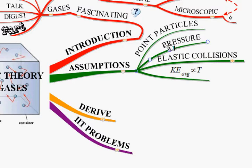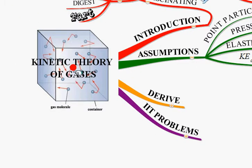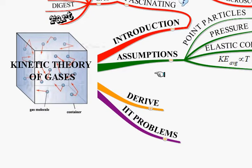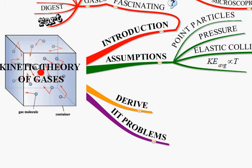The second assumption is about pressure exerted by gas molecules. We assume that pressure is caused by the collision of gas molecules with the walls of the container. You can see the molecules moving about inside the container. Each time one of these molecules collides with the wall, it exerts a force. The sum of all these forces exerted by collisions with the wall produces the pressure when divided by the area of the wall surface. We will find the total force exerted by gas molecules when they hit each wall of the container.